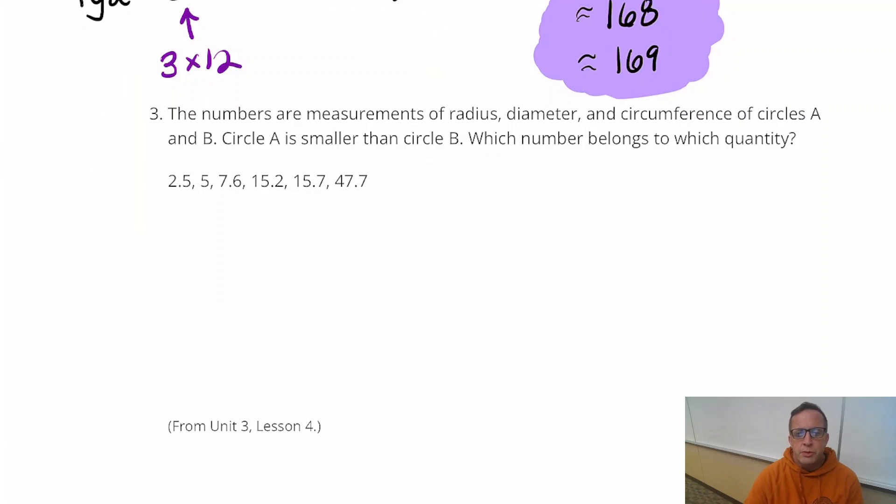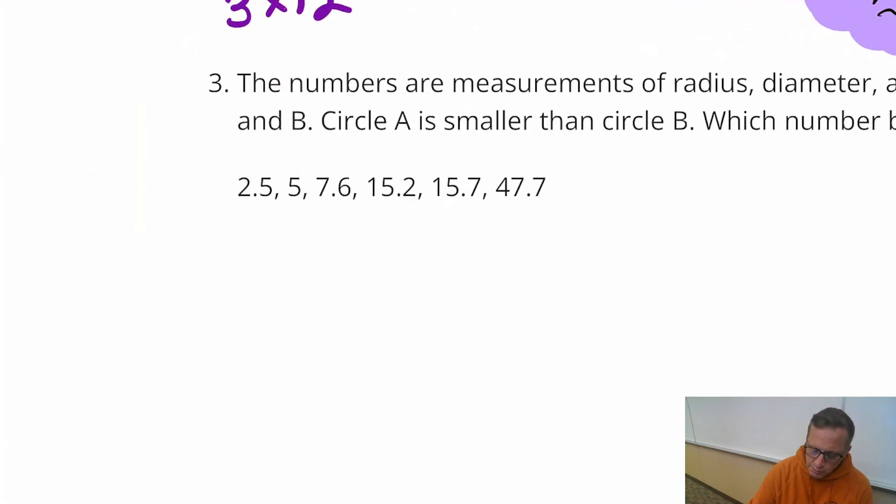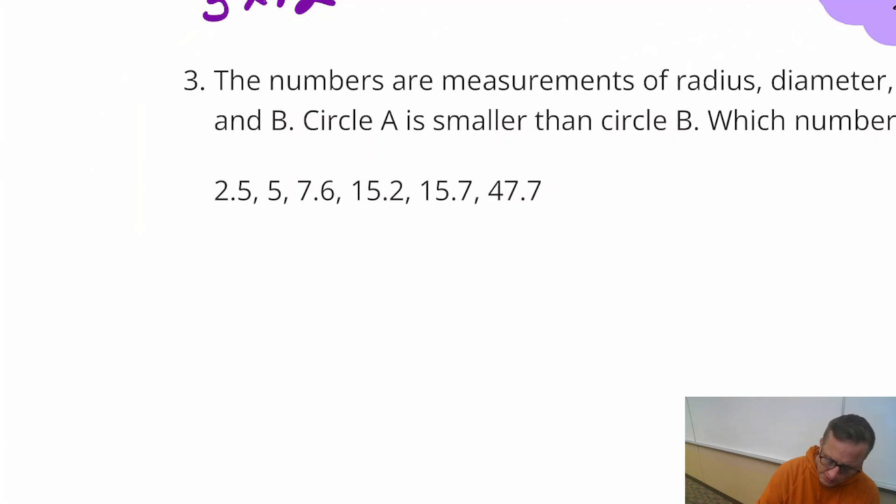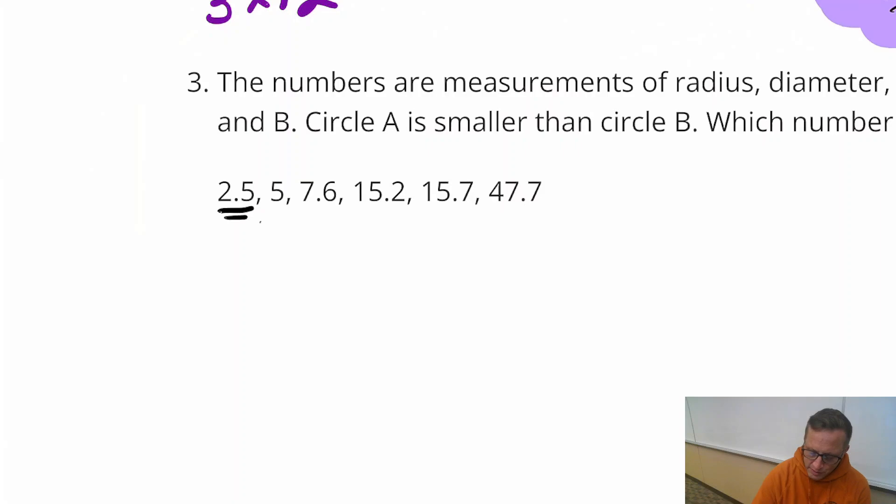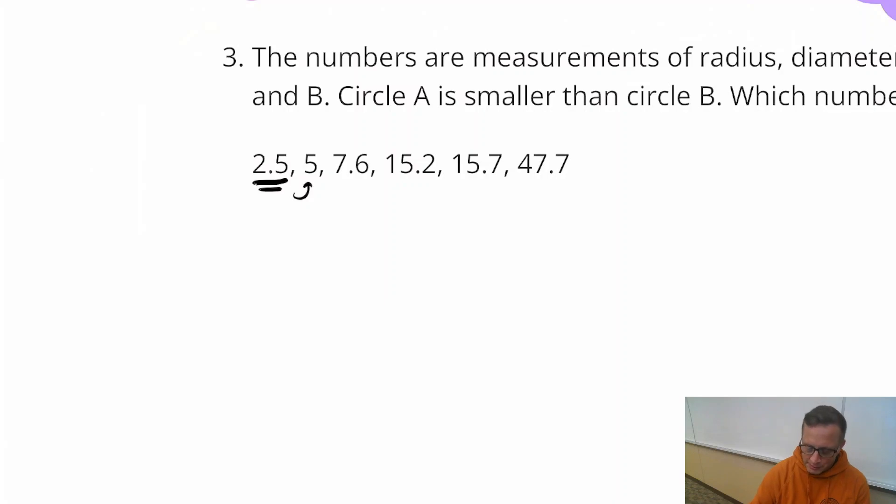For number three, the numbers are measurements of radius, diameter, and circumference of circles A and B. Circle A is smaller than circle B, which number belongs to which quantity. I think this seems pretty obvious. I would bet that, this is not really a betting type of situation, but I noticed that 2.5 is half of 5. So it's got to be, that has to be the radius and diameter right there. And that's probably the radius and diameter of circle A.